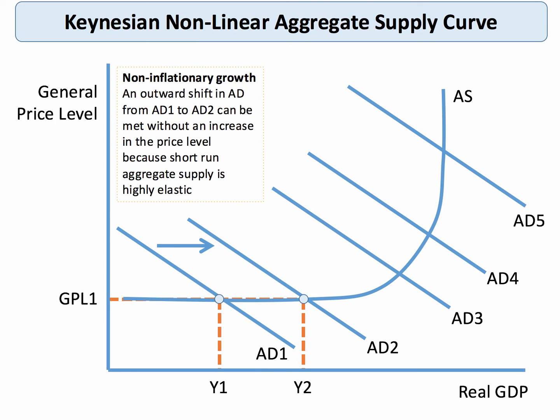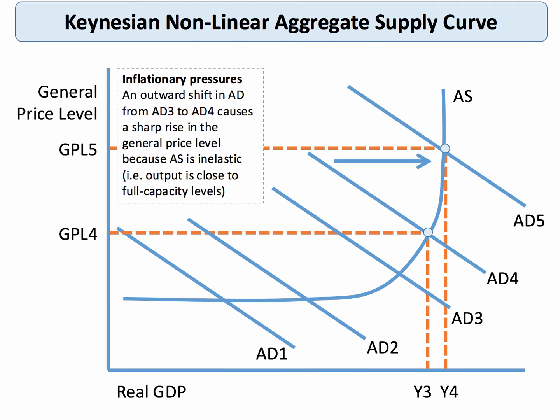This is how we draw a Keynesian aggregate supply curve. When we take, for example, a shift in aggregate demand from AD1 to AD2, it is mostly elastic because the economy has plenty of spare capacity — aggregate supply is highly elastic. However, as we get to high levels of GDP and employment, for example, an increase in AD from AD3 to AD4 causes quite a big rise in the general price level, and again from AD4 to AD5, because aggregate supply is inelastic.